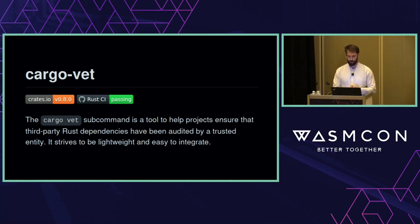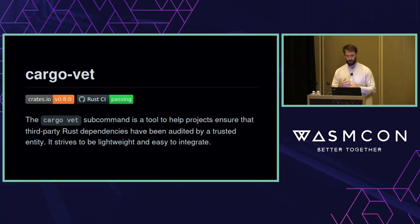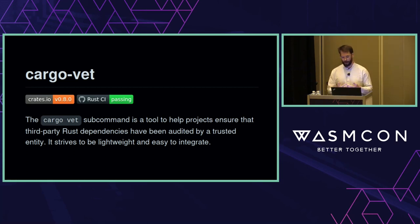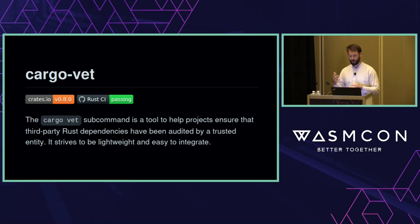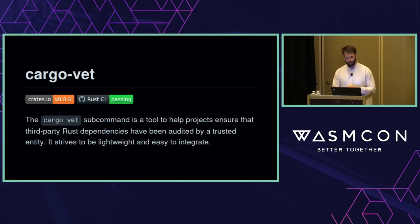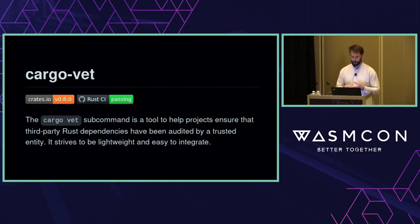In the WasmTime project, we use CargoVet to require that a trusted WasmTime maintainer manually reviews all new dependencies and all updates to existing dependencies. We're also slowly burning down the list of yet-to-be-reviewed libraries that WasmTime already depended on before we introduced CargoVet. What's cool about CargoVet is that it benefits from network effects — it allows one project to import audits from another. Right now, WasmTime imports and trusts Firefox's audits, Firefox imports and trusts our audits, and Google Chrome and Fuchsia are also publishing audits. The bigger the CargoVet community gets, the better we all benefit.